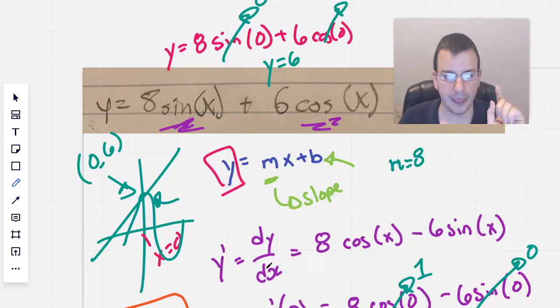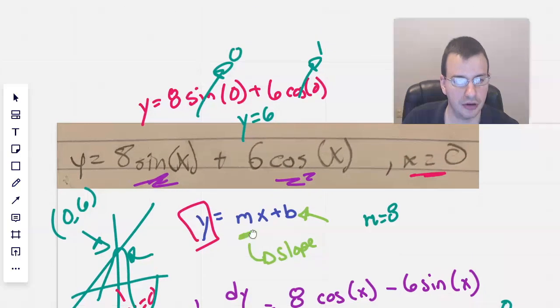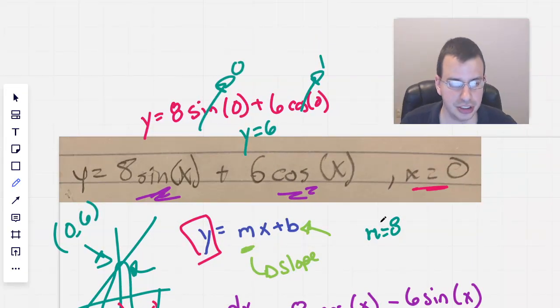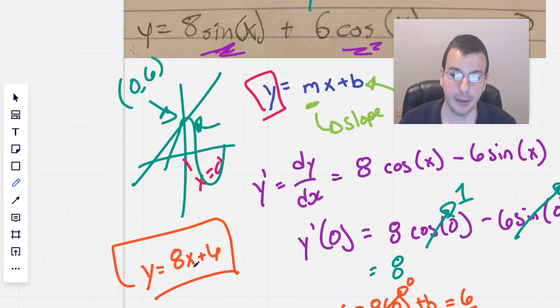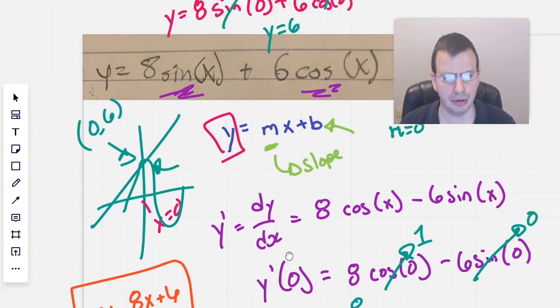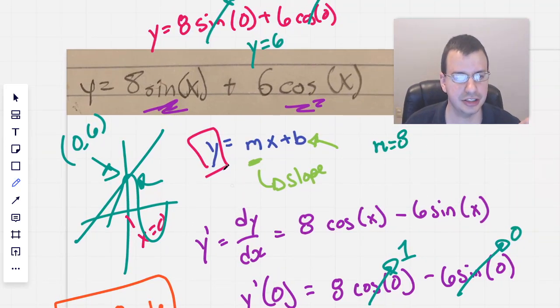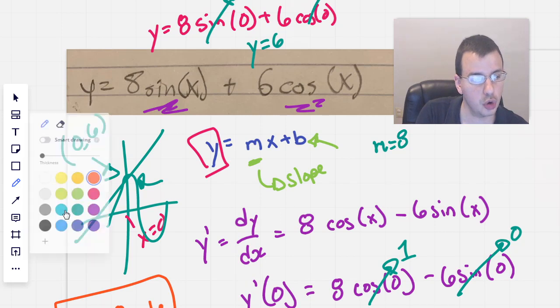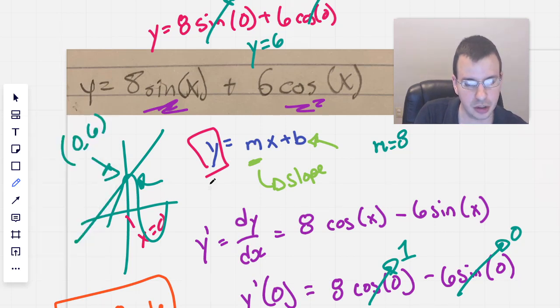So the slope for this equation at x equals zero will be y equals eight x plus six. So to kind of recap what we did here, I know, terrible jumble, hope your work is nicer than this. So we started with what the equation of a line is, y equals mx plus b. We find m, the slope, using the derivative.